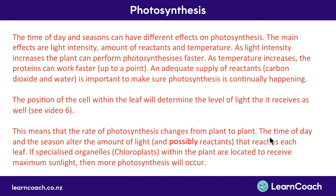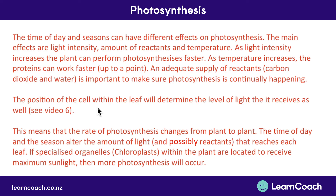Now the last point: factors affecting the rate of photosynthesis. Time of day and seasons affect it mainly through the amount of light. As light intensity increases, the plant can perform photosynthesis faster. As temperature increases, enzymes work faster — only up to a point, because too much heat denatures them. An adequate supply of reactants (carbon dioxide and water) ensures photosynthesis continues. Also, the position of a cell within a leaf determines how much light it receives — cells near the top of the leaf will get maximum sunlight, which we'll explore in a later video.